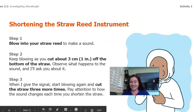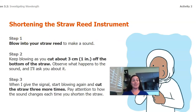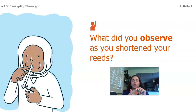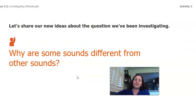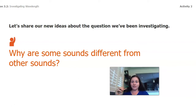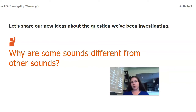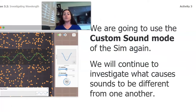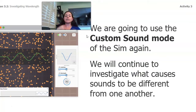That is hard to do! You probably noticed something happening to my instrument as I was playing it. What did you observe as this — called a reed — got shorter and shorter? I noticed the sound was already pretty high-pitched from the beginning, and it seemed like it got higher and higher every time I cut it. So that makes me wonder: why are some sounds different from other sounds? We knew about volume and amplitude — how big or loud a wave is. So what else? To investigate this, we're going to go into the sim and use the custom sound mode to investigate what causes sounds to be different from one another.